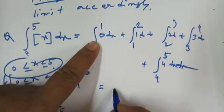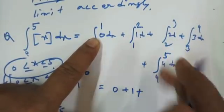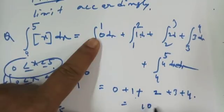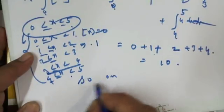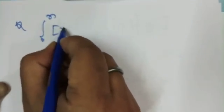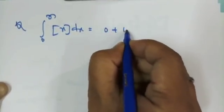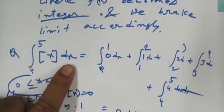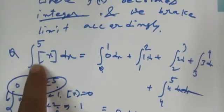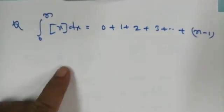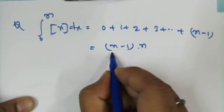So this gives 0 + 1 + 2 + 3 + 4 = 10. In general, ∫₀ⁿ ⌊x⌋ dx = 0 + 1 + 2 + ... + (n−1), because when 0 to 5, the last value is 4 = 5−1. So in general the last term is n−1, giving n(n−1)/2.